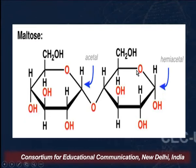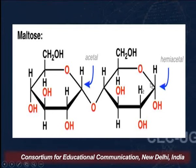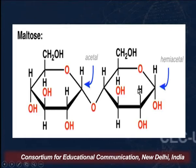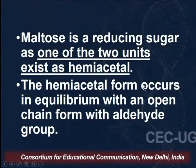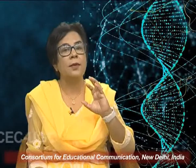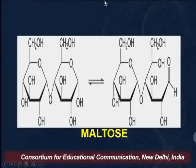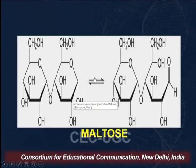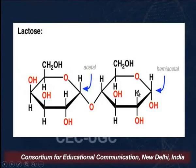The anomeric carbon of the second unit is attached to an ether group, a hydroxyl group, a hydrogen, and the rest of the molecule — so it is existing as a hemiacetal. Since one of the units is existing as a hemiacetal, this unit will open up in basic medium and be in equilibrium with its open chain structure, which has an aldehydic group and acts as a reducing sugar. That is why maltose acts as a reducing sugar: one of its two units is existing as a hemiacetal, which is in equilibrium with the open chain form containing an aldehydic group, and this will react with Tollens' reagent to give a positive test.